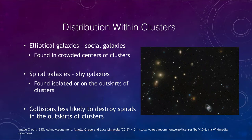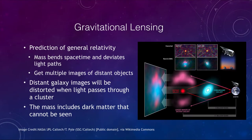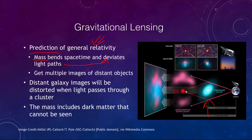One of the ways we can look at clusters is through gravitational lensing, a prediction of general relativity. Mass bends space and time, meaning that light paths will deviate when they pass near a massive object. A foreground galaxy does the lensing — light from a distant galaxy gets bent around it and comes to Earth, making us see multiple images of that distant galaxy or quasar.